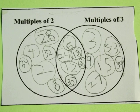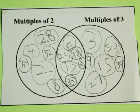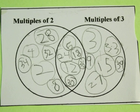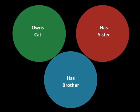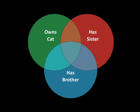Now let's look at a three-question Venn diagram: Do you own a cat? Have you got a sister? Have you got a brother? That is usually where we end with our discussion of Venn diagrams — with this very familiar three-circle diagram.